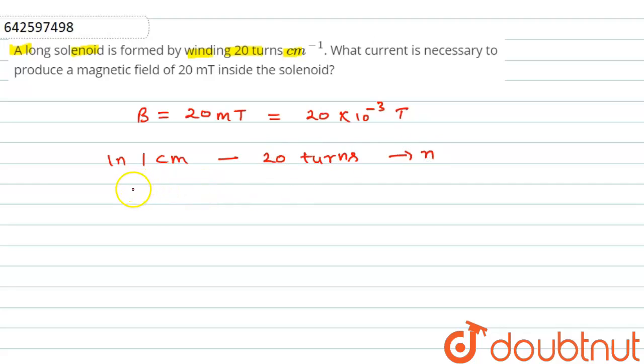So we can write that in 10 to the power minus 2 meter there will be 20 turns. In one meter there will be 20 divided by 10 to the power minus 2 turns. So n will be equal to 20 into 10 to the power 2 turns.